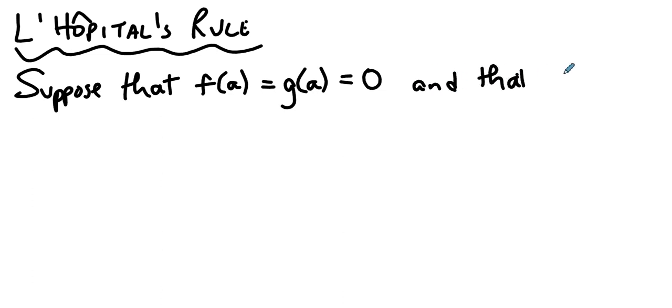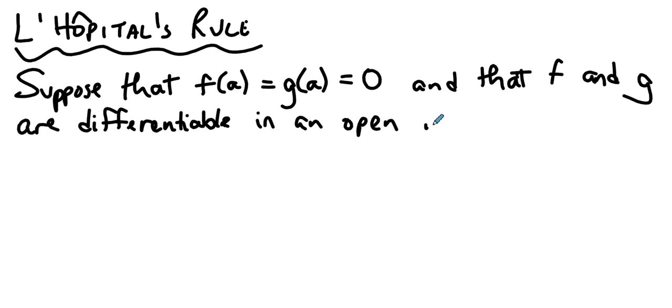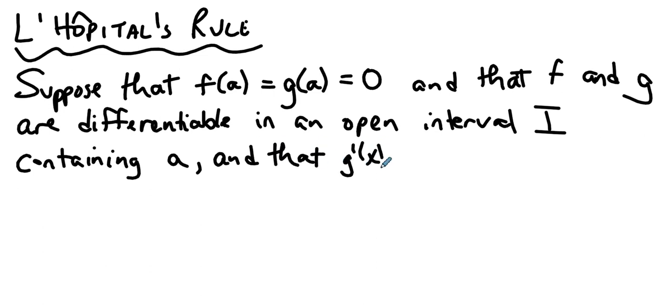And that f and g are differentiable in an open interval, we can call that open interval I, containing the point a, and that g prime of x is not zero anywhere on that interval except maybe at a.